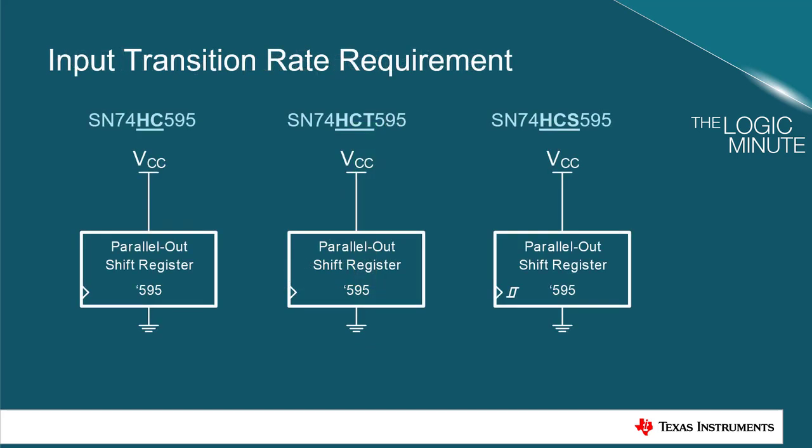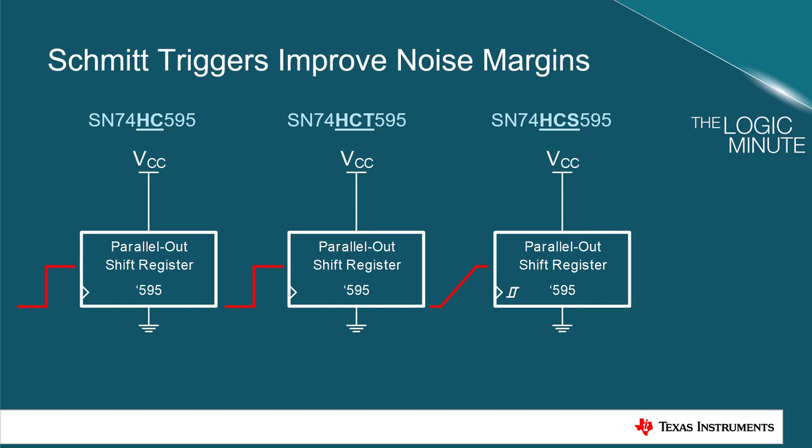Both the HC and HCT family devices must have fast input transitions to work properly, while the Schmitt trigger inputs of the HCS family allow for very slow transitioning inputs. Additionally, the Schmitt trigger inputs of the HCS family provide significantly improved noise margins and prevent multiple triggers from noisy signals.